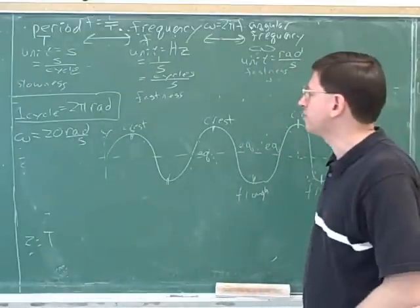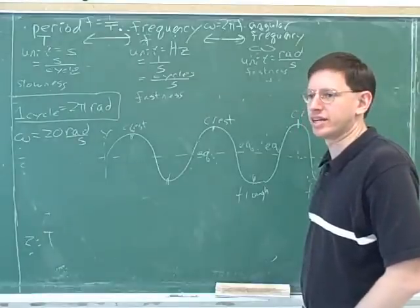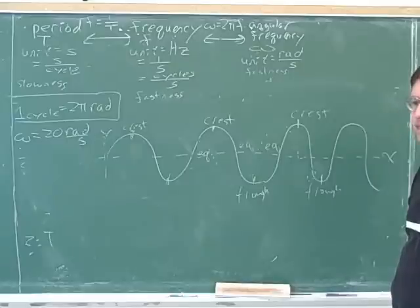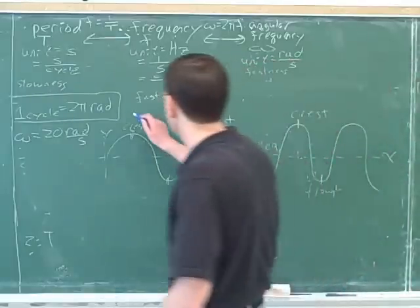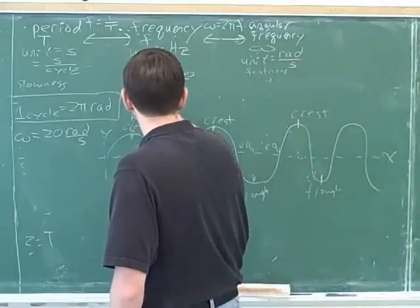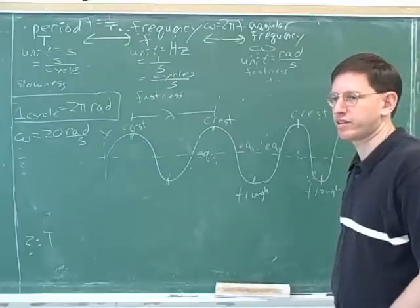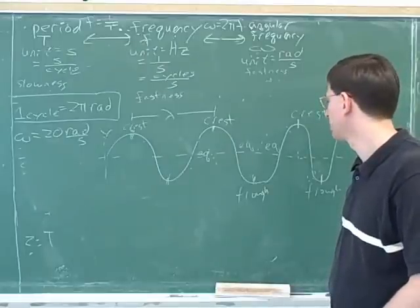Now let's say that we wanted to put the wavelength on here. Let's say we had to take this graph and label the distance that the wavelength represents. So what would be a good starting point and ending point for the distance that represents the wavelength? From crest to crest. Yeah. Good. That would be one wavelength. What would be another way that we could indicate the wavelength?